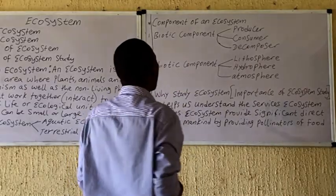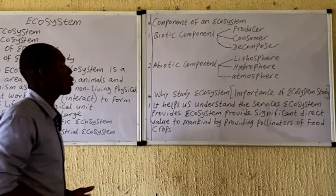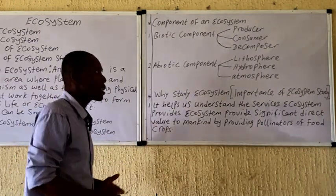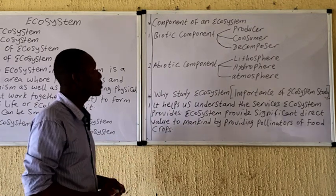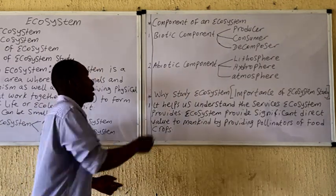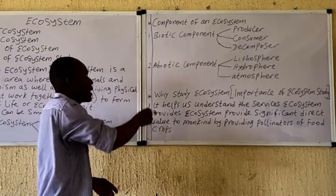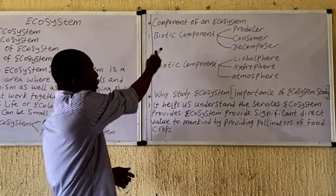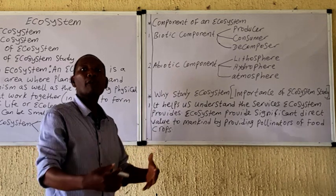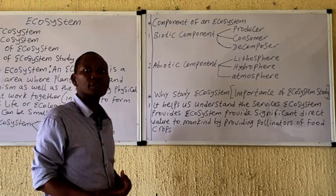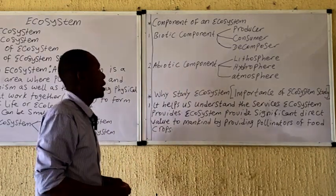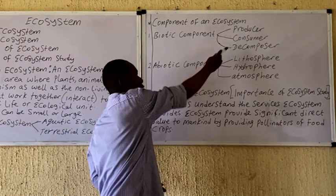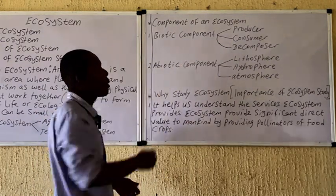The components of an ecosystem, or the structure of an ecosystem, is divided into two: the biotic components and the abiotic components. The biotic components comprise the living components of the ecosystem, and they include the producers, the consumers, and the decomposers.